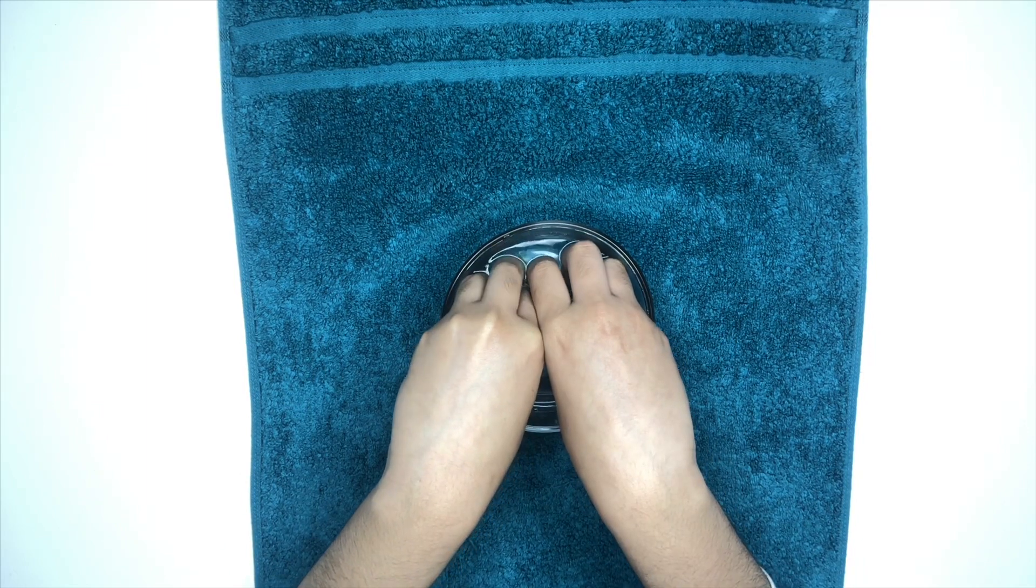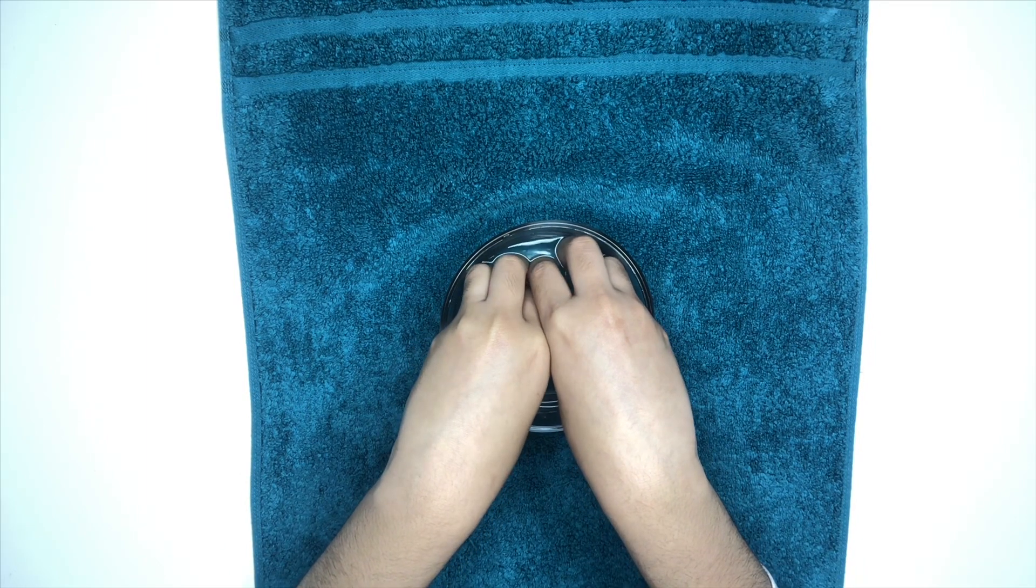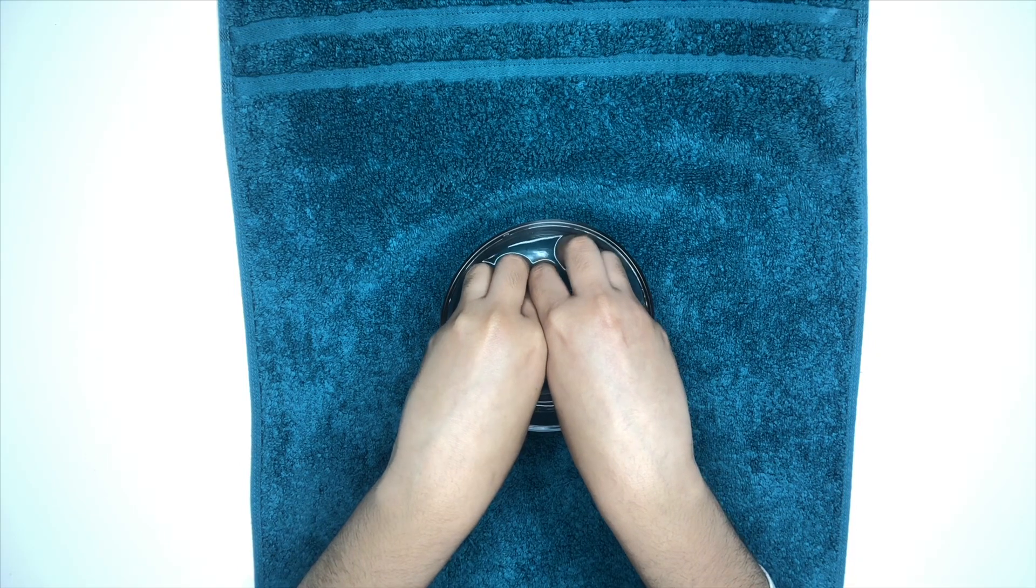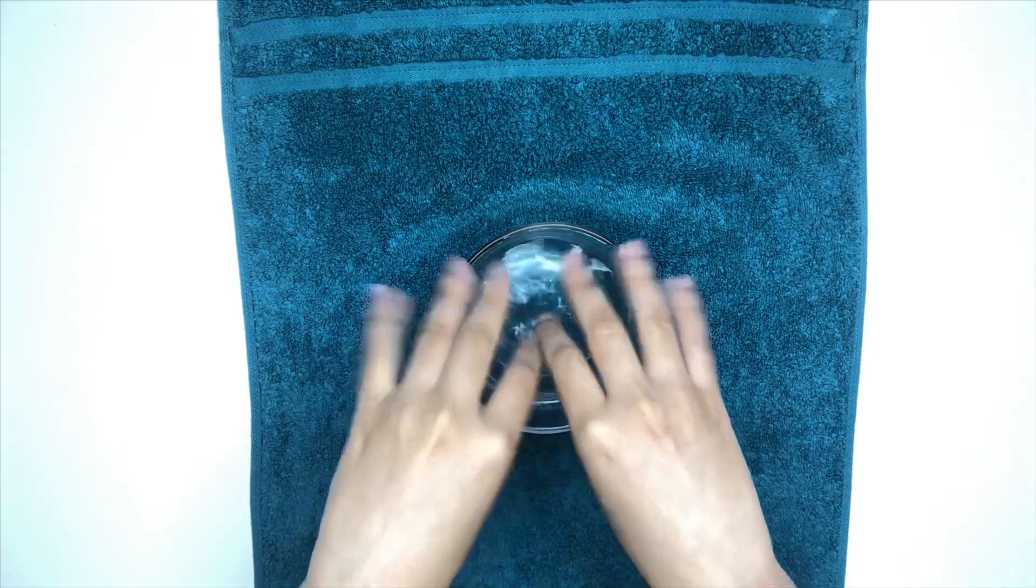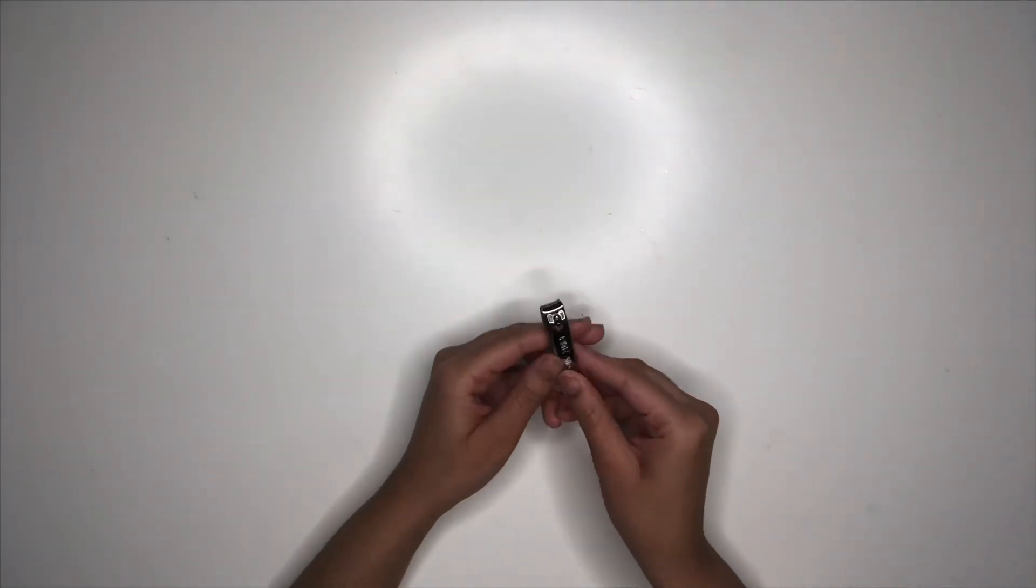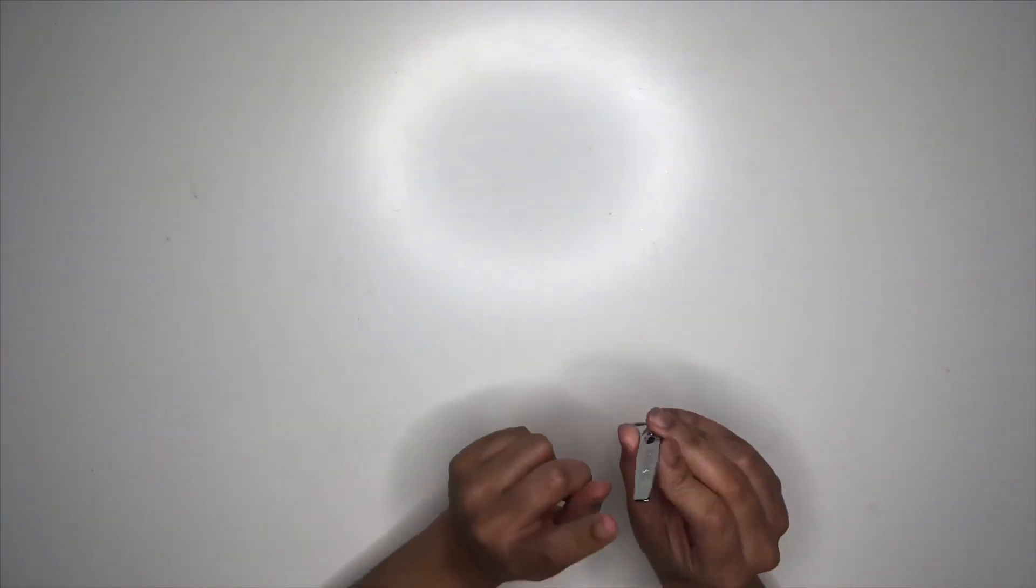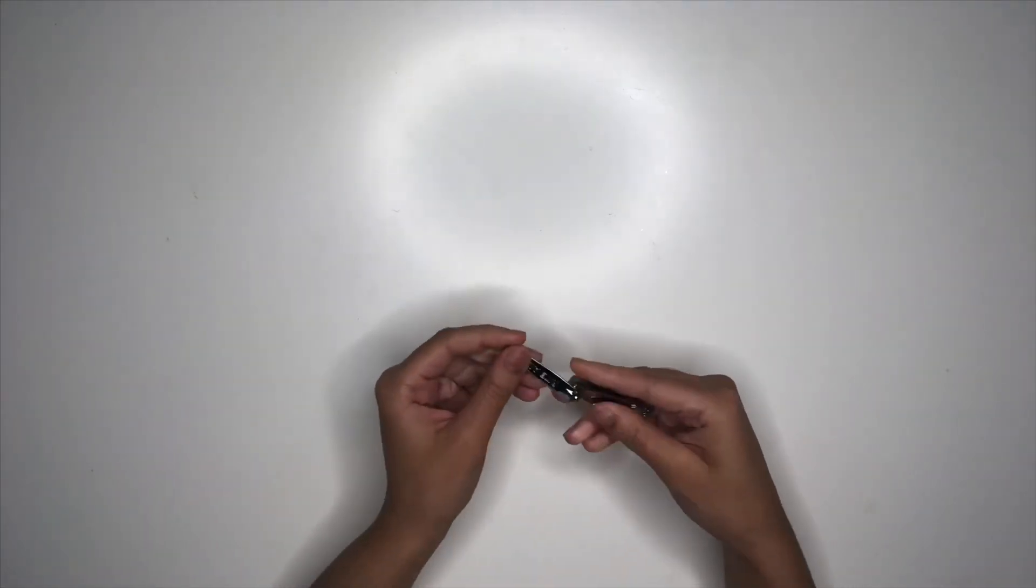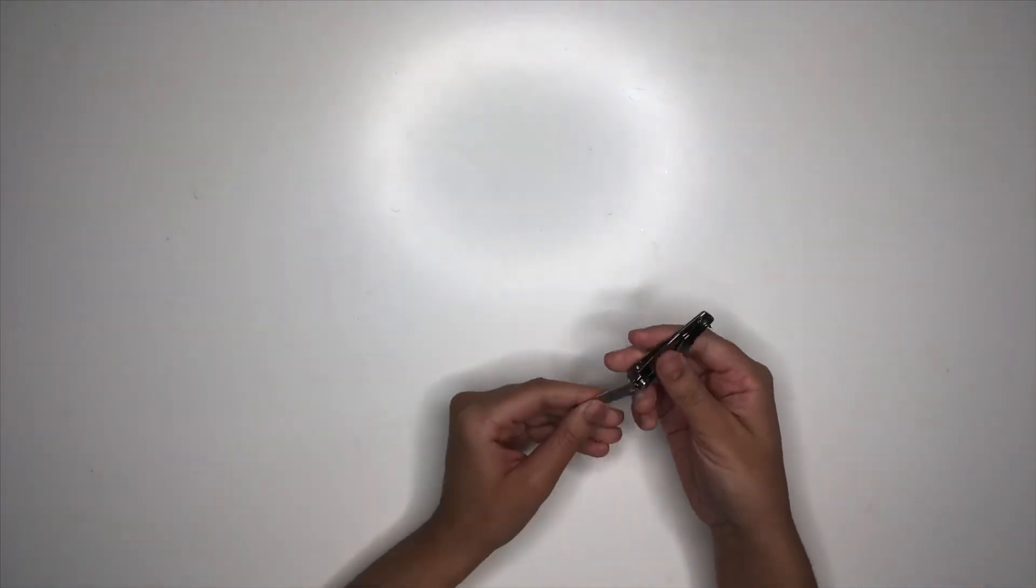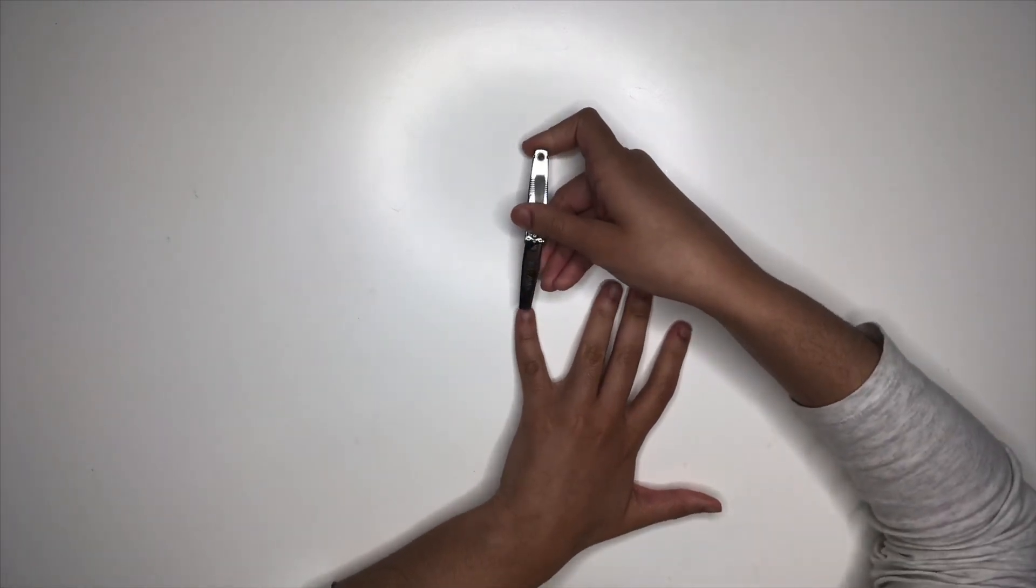All right, so the first thing we want to do is we want to go ahead and take that bowl of water. What I did was I put a little bit of hand soap in it, however you can do whatever you want. I'm going to soak my hands for a couple minutes, make sure that my hands are soft and nice to work on.